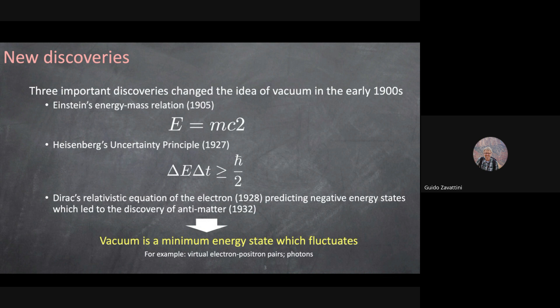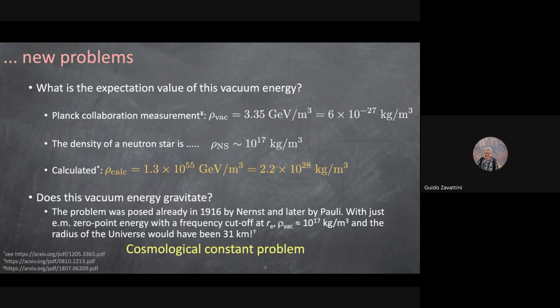You now have energy fluctuations and equivalence between mass and energy, so you can have mass fluctuations. This allows you to produce in vacuum virtual electron-positron pairs, or even virtual photons. The idea of vacuum is now that it's a minimum energy state — and given that, it can fluctuate. This vacuum is no longer a steady state; it's very dynamic and fluctuates continuously.